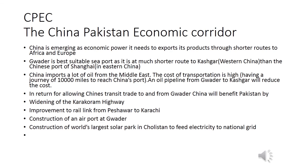China imports oil from the Middle East, and the long sea route costs a lot. But if a pipeline from Gwadar to Kashgar is made, it will reduce cost and time significantly. China is going to be greatly benefited by Gwadar's Chinese transit trade. In return, China will undertake development in Pakistan including widening of the Karakoram Highway, improvement of the rail link from Peshawar to Karachi, construction of Gwadar port, and construction of the world's largest solar park in Cholistan to feed electricity to the national grid.